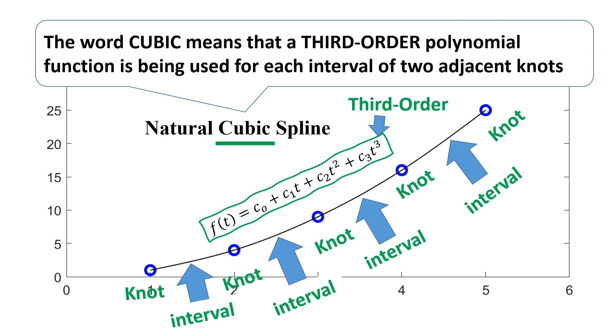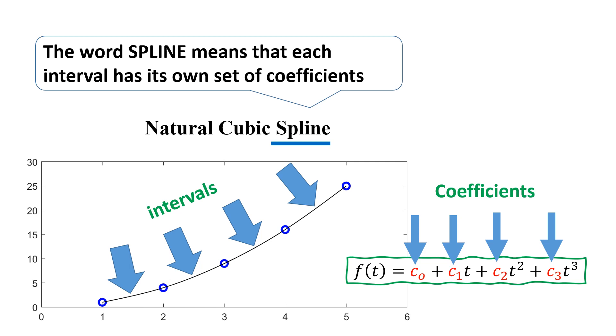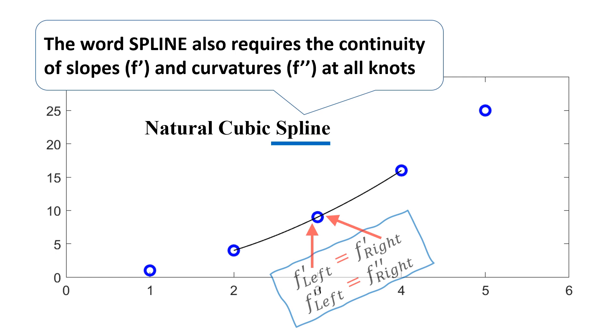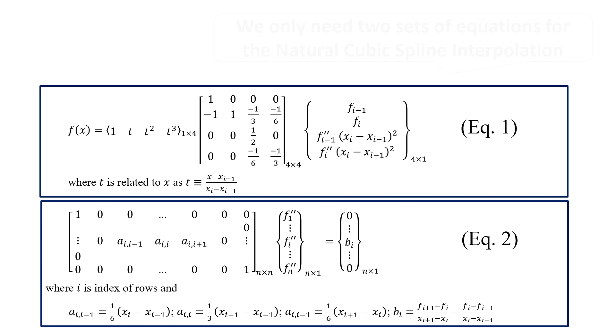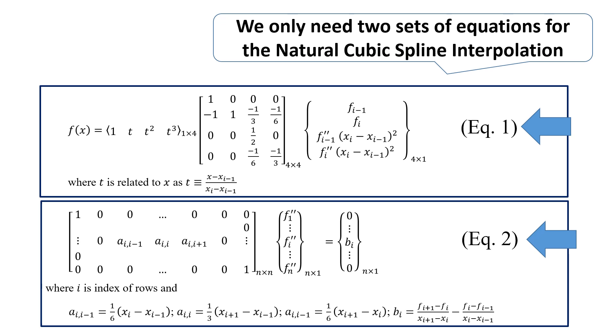The word spline means that each interval has its own set of coefficients. The word spline also requires the continuity of slopes and curvatures at all knots. We only need two sets of equations for the natural cubic spline interpolation.